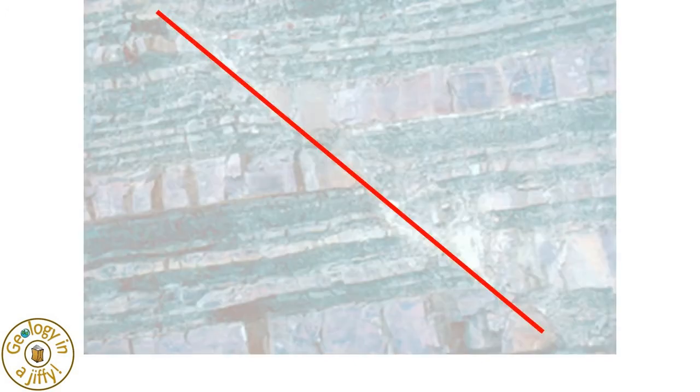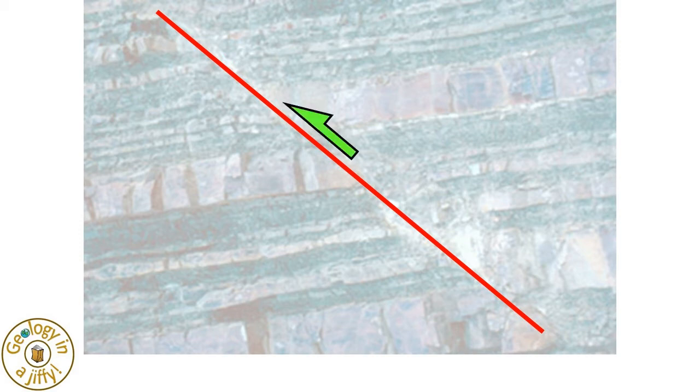Wow! If we study the reverse fault in this cliff face, we can clearly see the plane about which the movement has occurred—the hanging wall having moved upwards and over from the right, the foot wall having moved downwards to the right.